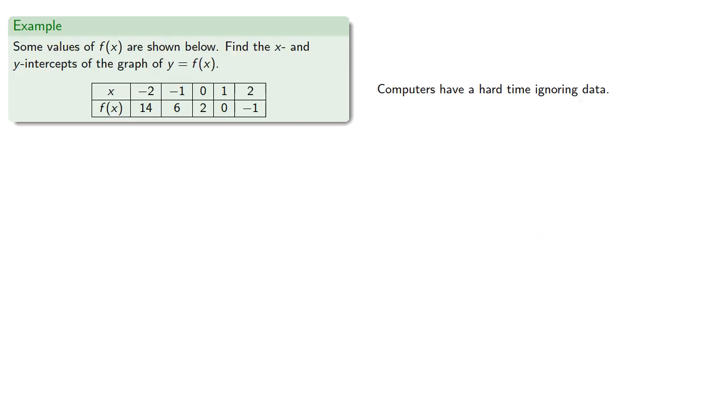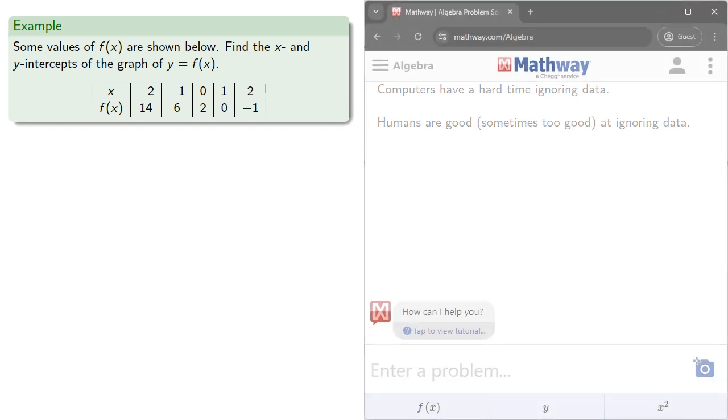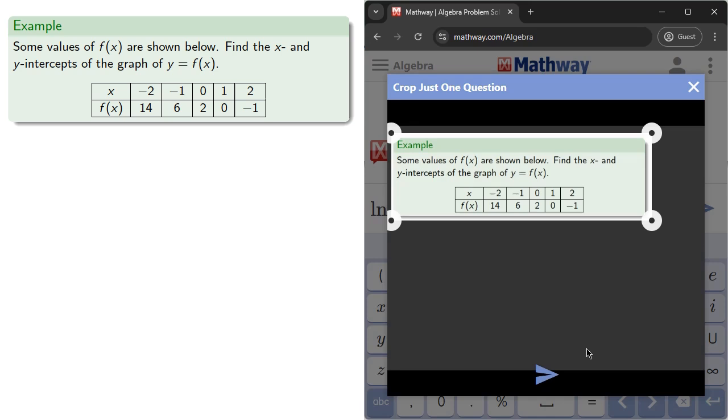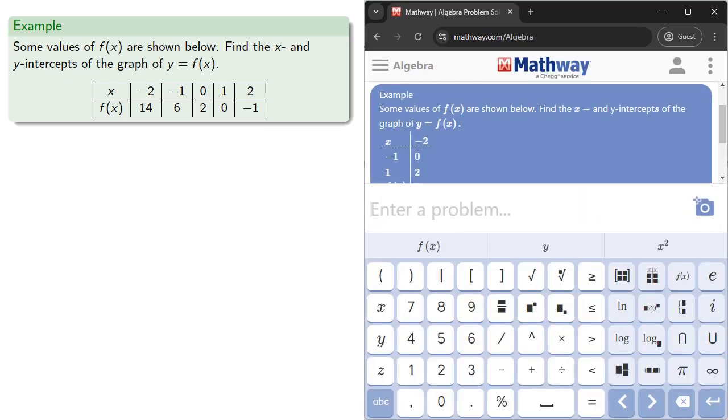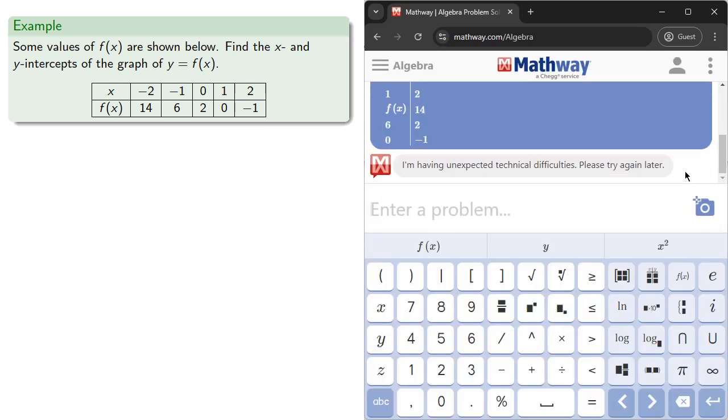Computers also have a hard time ignoring data, while humans are good, sometimes too good at ignoring data. So computers have a hard time with data presented in tabular form, but again, humans find it easy if they understand what they're looking for.